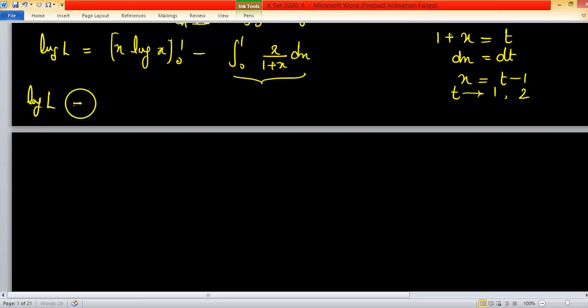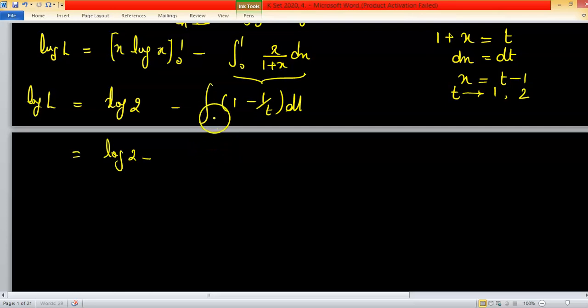Finally log L equals to this one gives you log 2 minus 1 minus 1 upon t dt and integration. And you can put limit after some times log 2 minus t minus log t and limits lower limit and upper limit.